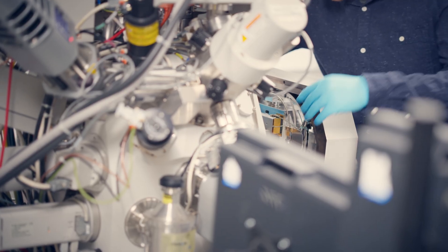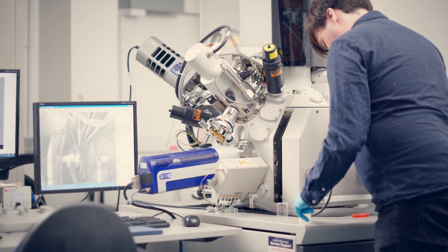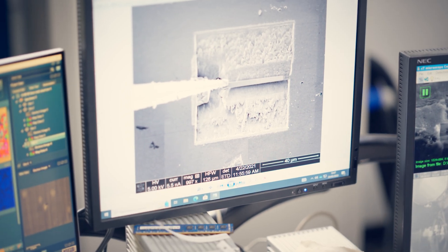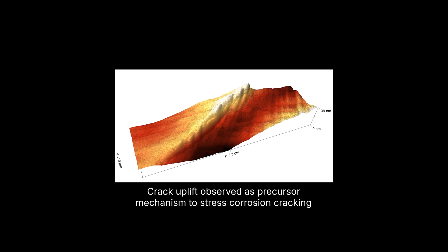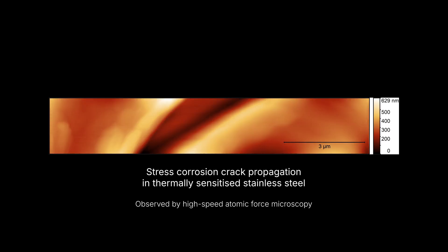We have over 20 million pounds worth of equipment that we use to study nuclear materials, as well as experts in the analysis of those materials. One of the more significant findings we've had is using the high-speed atomic force microscope here to watch cracks grow in real time under a corrosive environment. This is really important for understanding how they form both within the reactor and in nuclear waste when it's being stored afterwards.